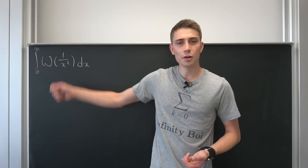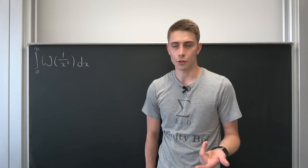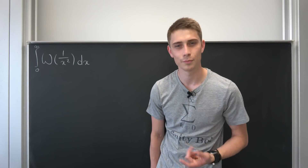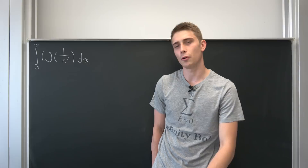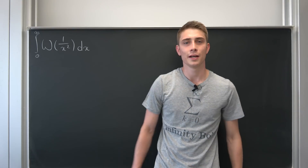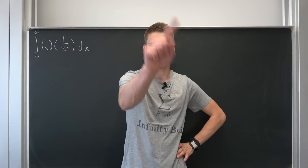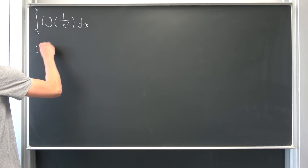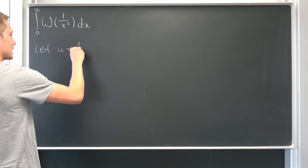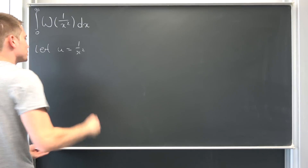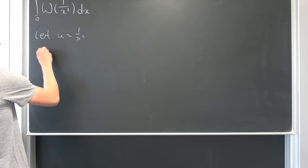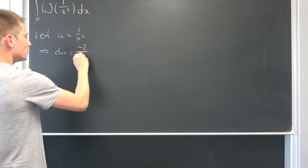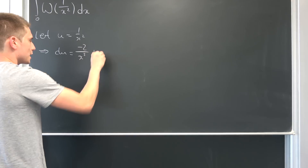So why not let this argument right here be equal to u? Not the German 'u' — u is our new variable. I'm going to choose u as a new variable. So let u be equal to 1 over x squared. Well, if you differentiate that, we are going to end up with du being equal to negative 2 over x to the third power, dx.